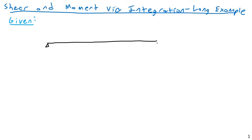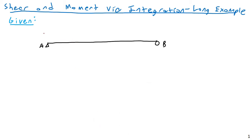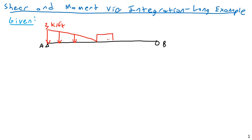So we have a beam from end A to end B with the following loads: first, a triangular load on the first six feet of the beam, with a maximum of three kips per foot. Then a constant load of two kips per foot over the next four feet. Then four feet further, a 20-kip point load, and at the end, a 24 kip-foot couple, or point moment.